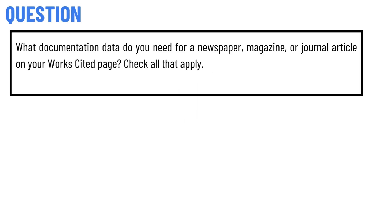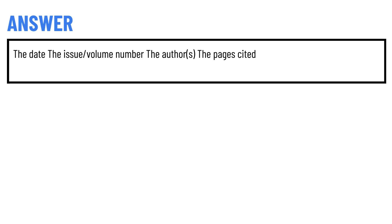Today's question is: what documentation data do you need for a newspaper, magazine, or journal article on your works cited page? Check all that apply. The correct answers are: the date, the issue volume number,